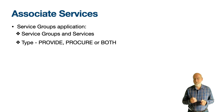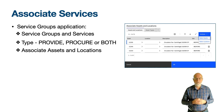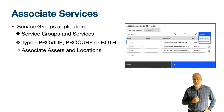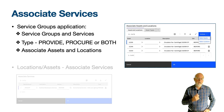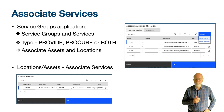The service groups application is found in the service level module and has an action called associate assets and locations, which allows you to associate multiple assets, locations, or asset types with a service group or service. With a service, the action will be found in the details menu of the service field. The associate services action found in the locations and assets application can only be used on the current record, for viewing its associated services or making changes.